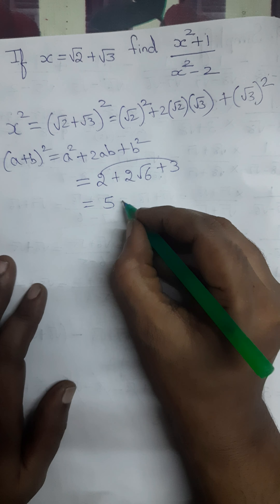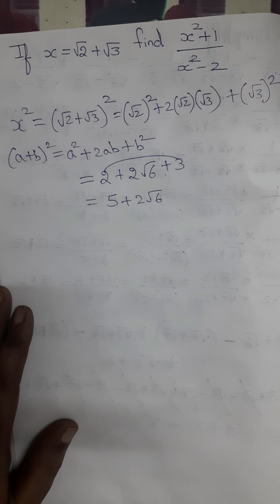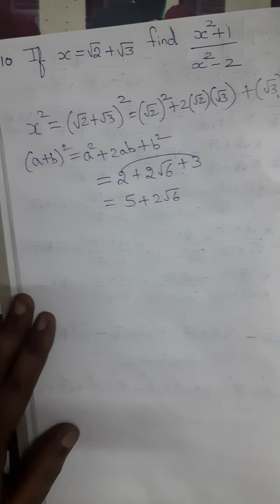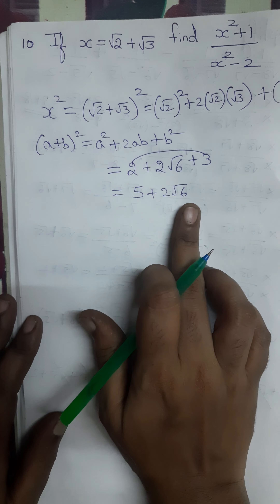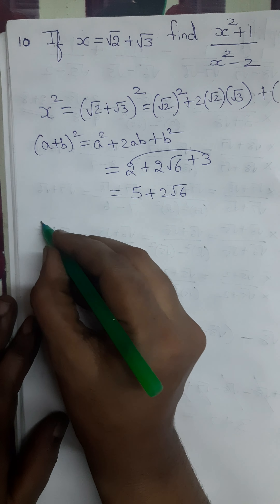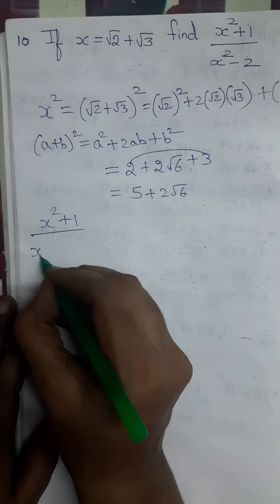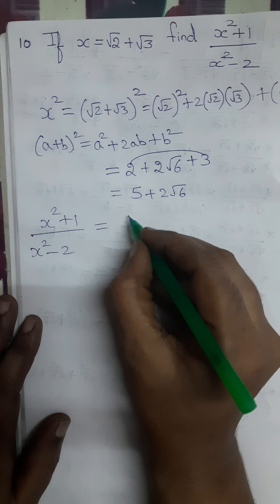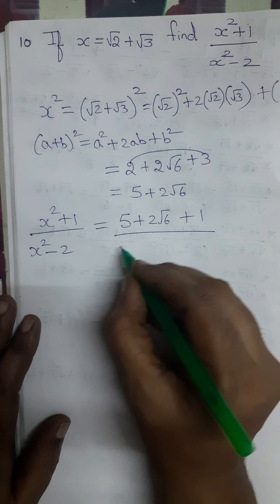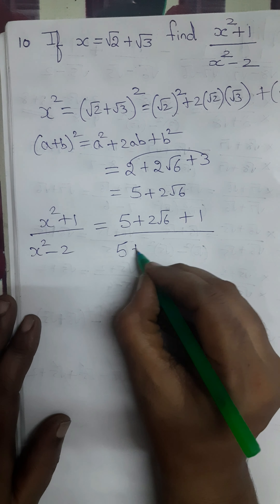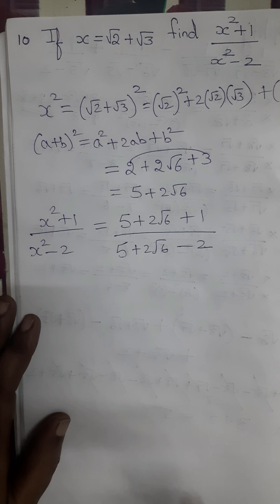So we get 2 plus 3 plus 2√6, that is 5 plus 2√6. Wherever we have x² in the question, we substitute this value. The question is x² plus 1 divided by x² minus 2, so we write: (5 + 2√6) + 1 divided by (5 + 2√6) minus 2.